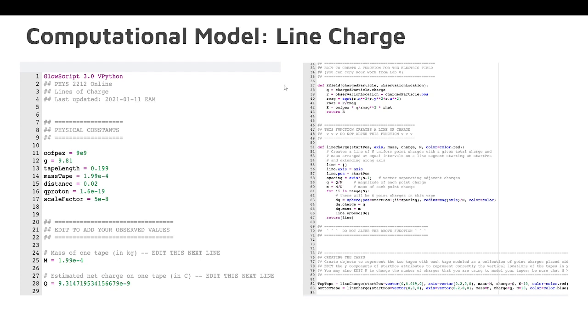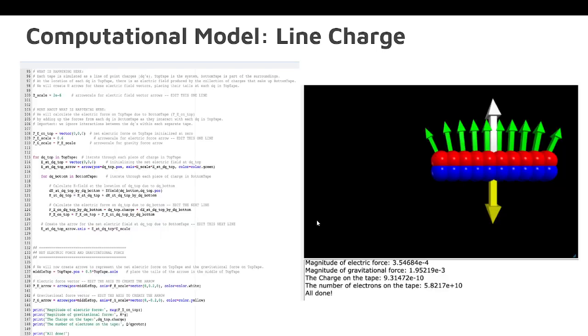So the computational model for the line charge, we had to iterate through the whole line, and with that we get this model where the blue is the bottom tape and red's top. The yellow arrow is gravitational force, the white is electrical force, and the green is the electrical field.